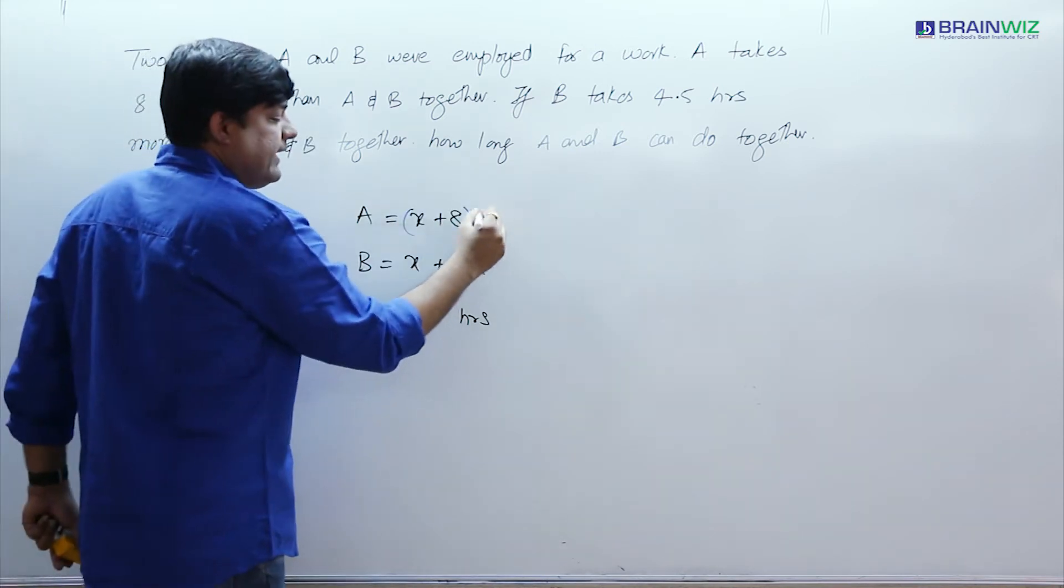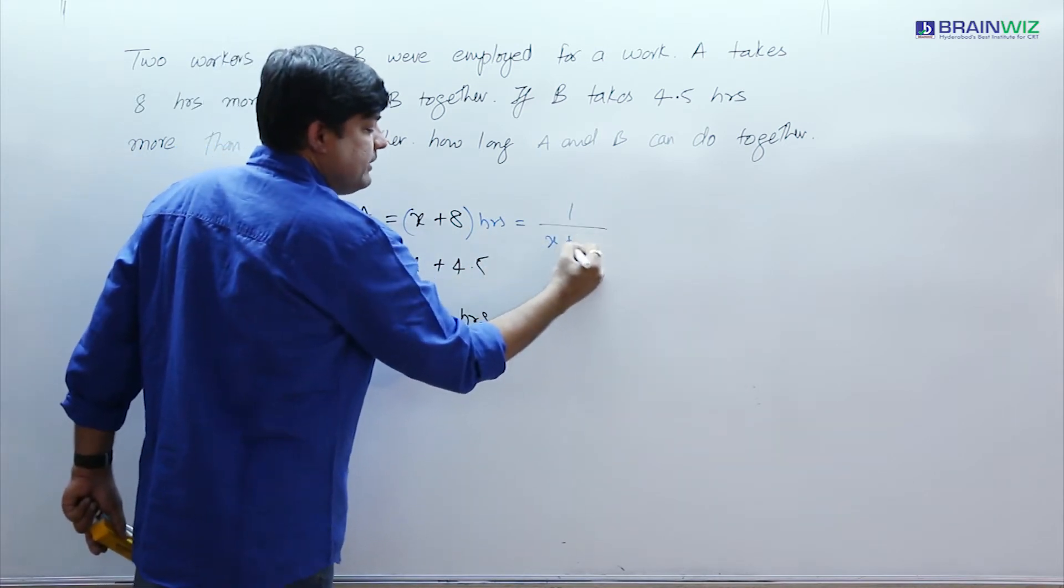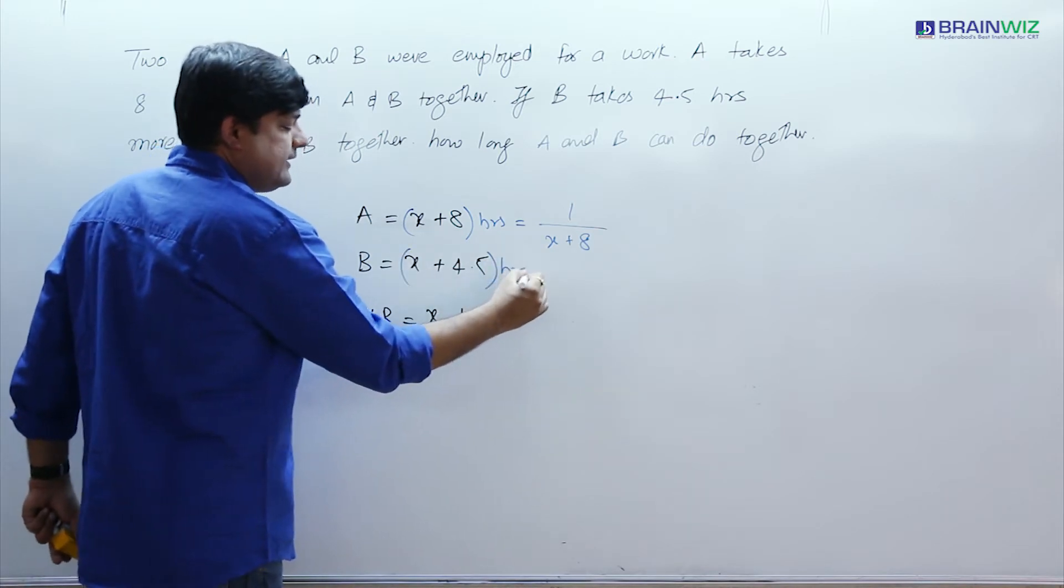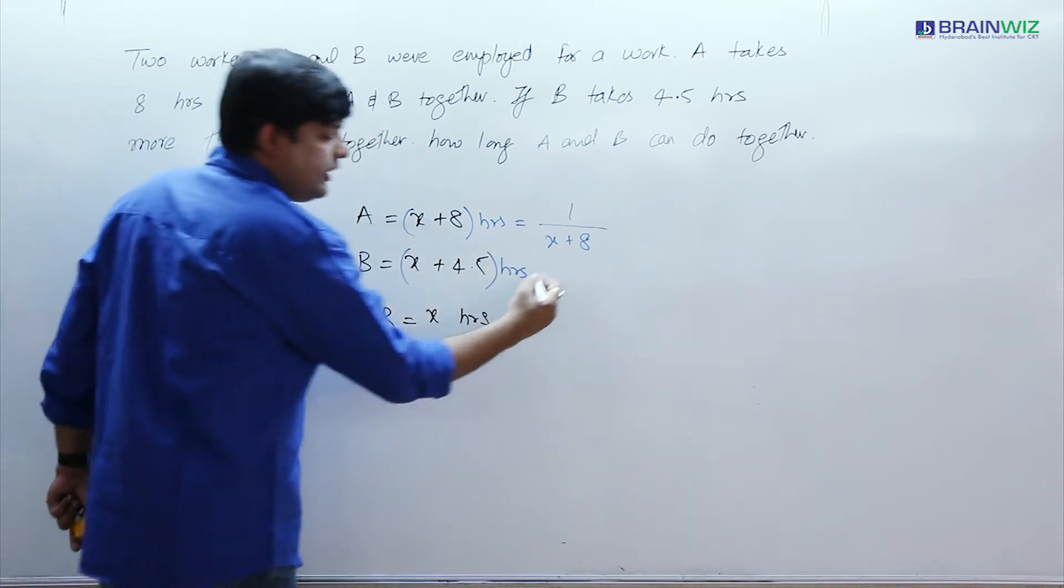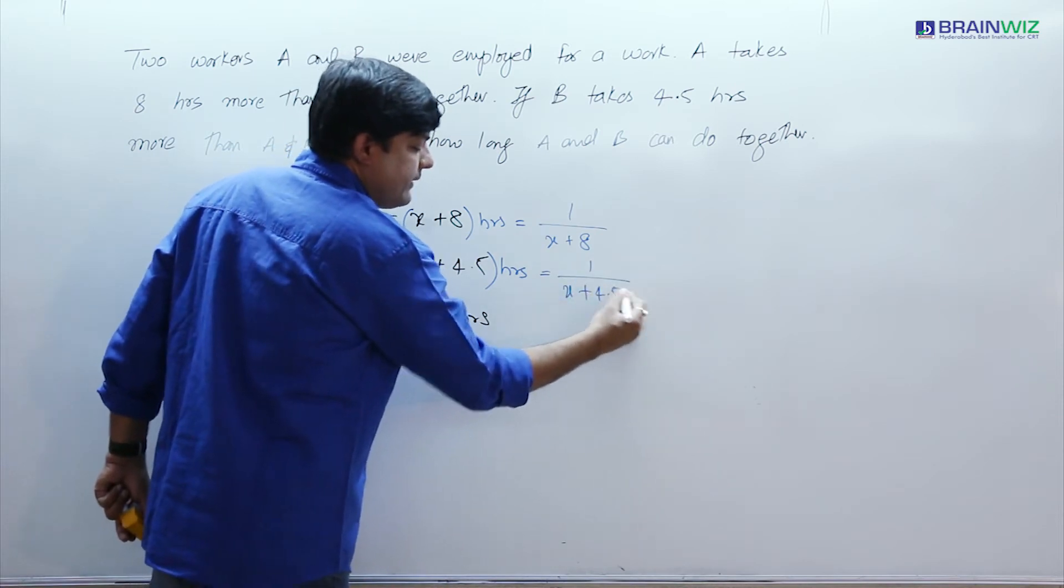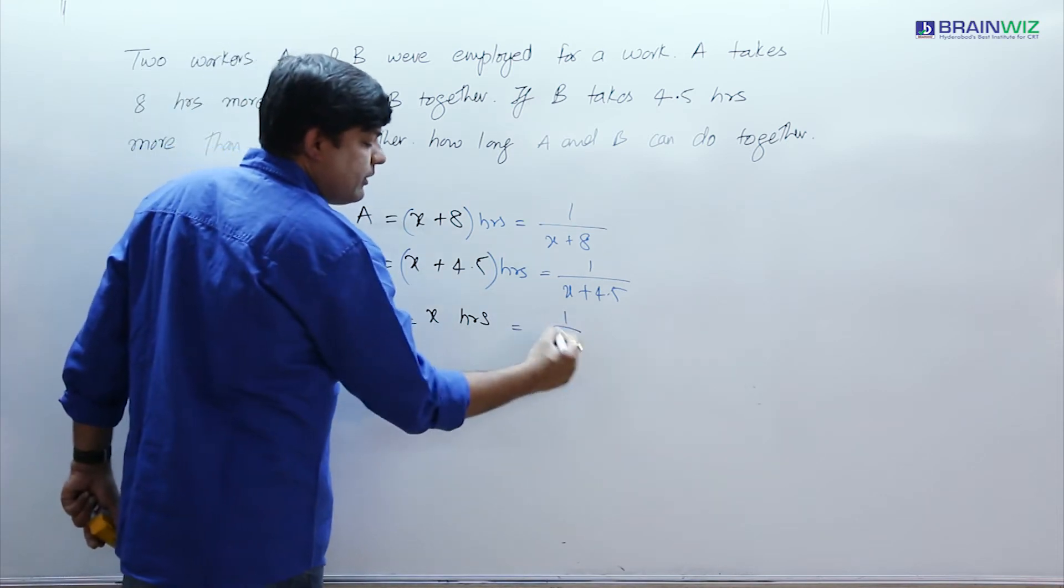A takes X plus 8 hours, so his 1 hour work is 1 by X plus 8. Same fashion, B takes X plus 4.5 hours, so he going to take in 1 hour 1 by X plus 4.5. Together they will take X hours, means 1 hour work is 1 by X.